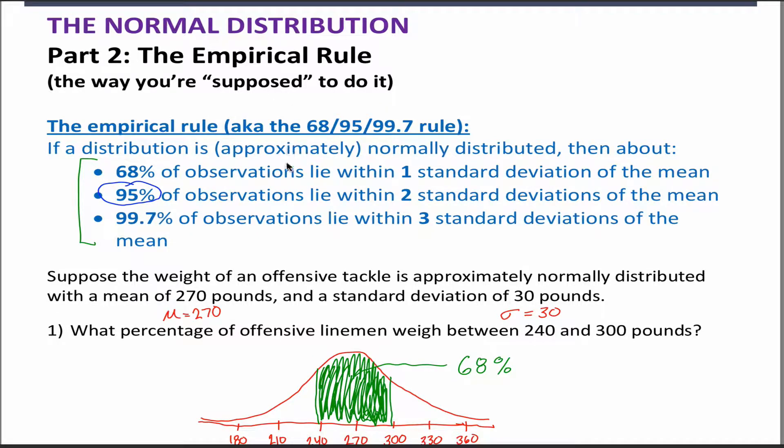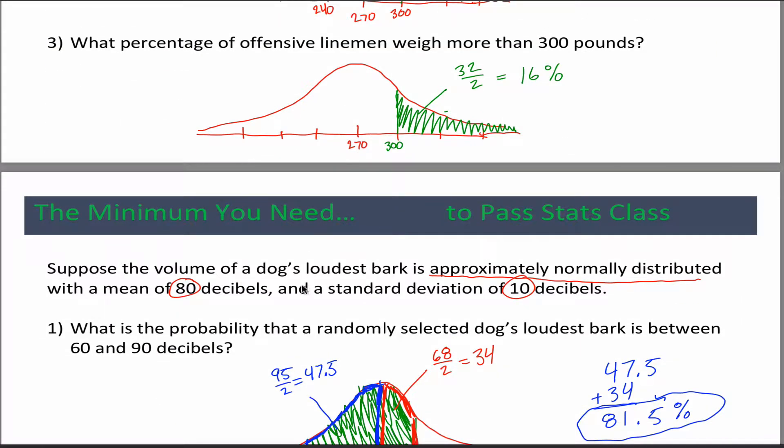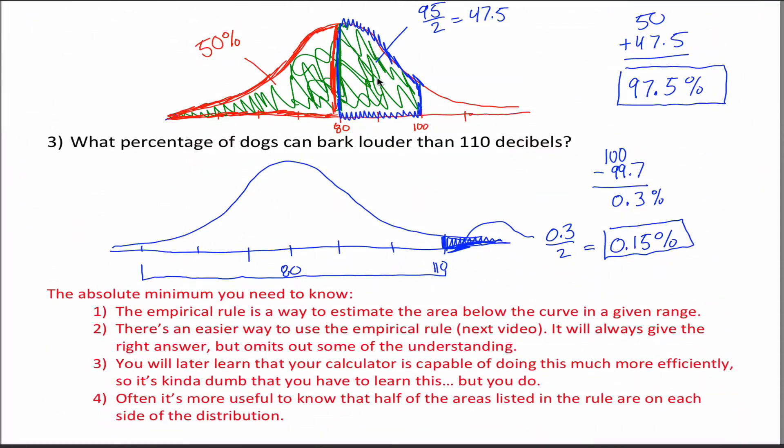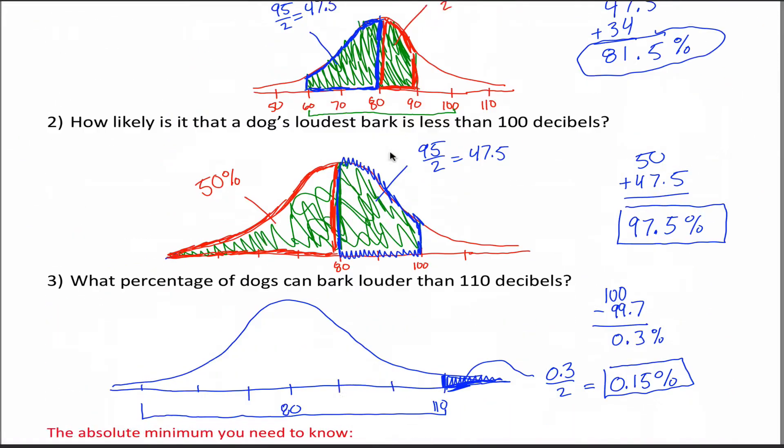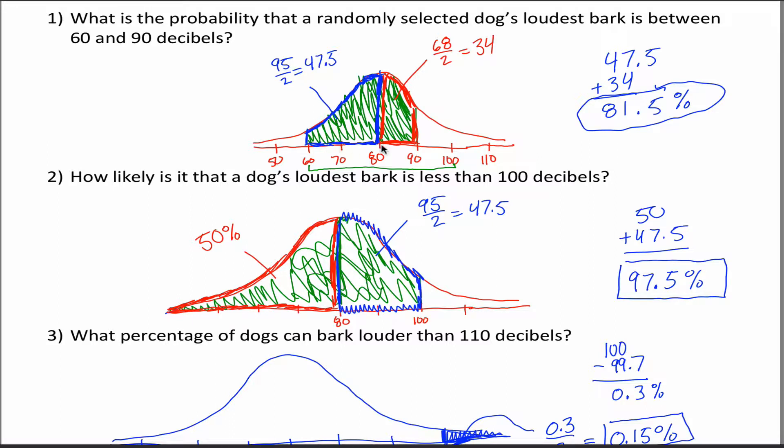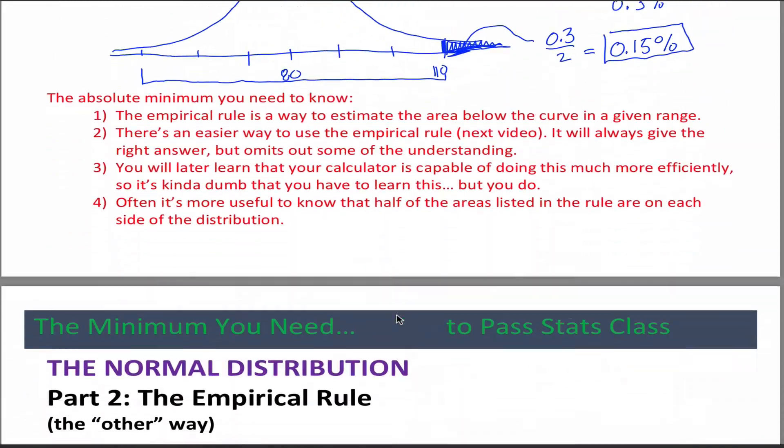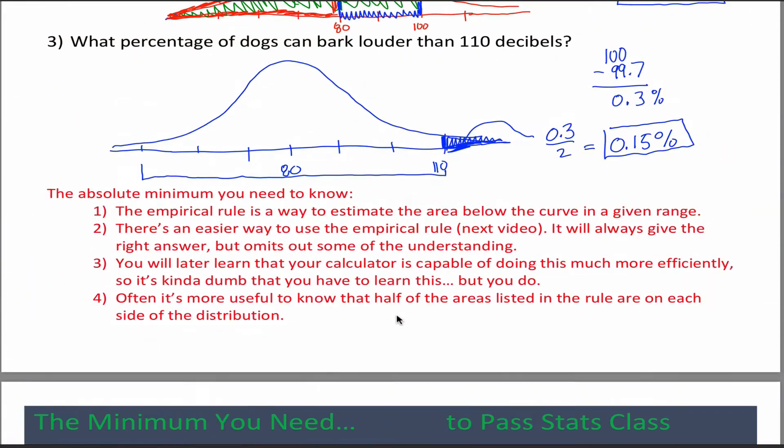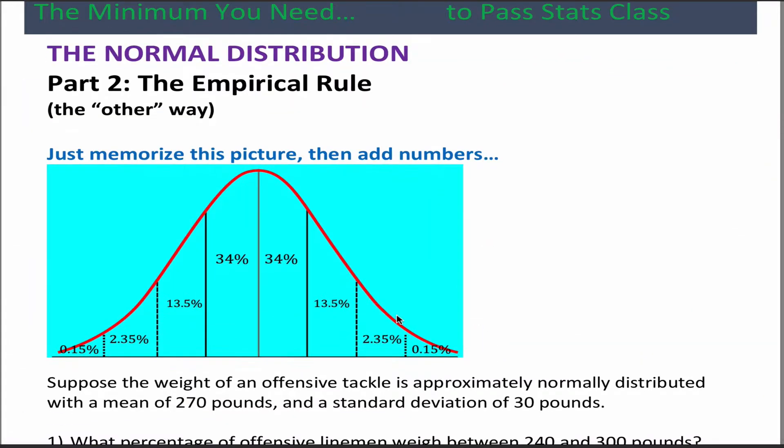I usually encourage students to do it this more normal way, this 68, 95, 99.7 way, but I know from experience that some students really struggle trying to learn these. They have a hard time viewing this region as this and this together and understanding why you're dividing numbers and then adding them back together. For some students, they really have a hard time with that. If you're not going to get the hang of this, then do it this way instead.